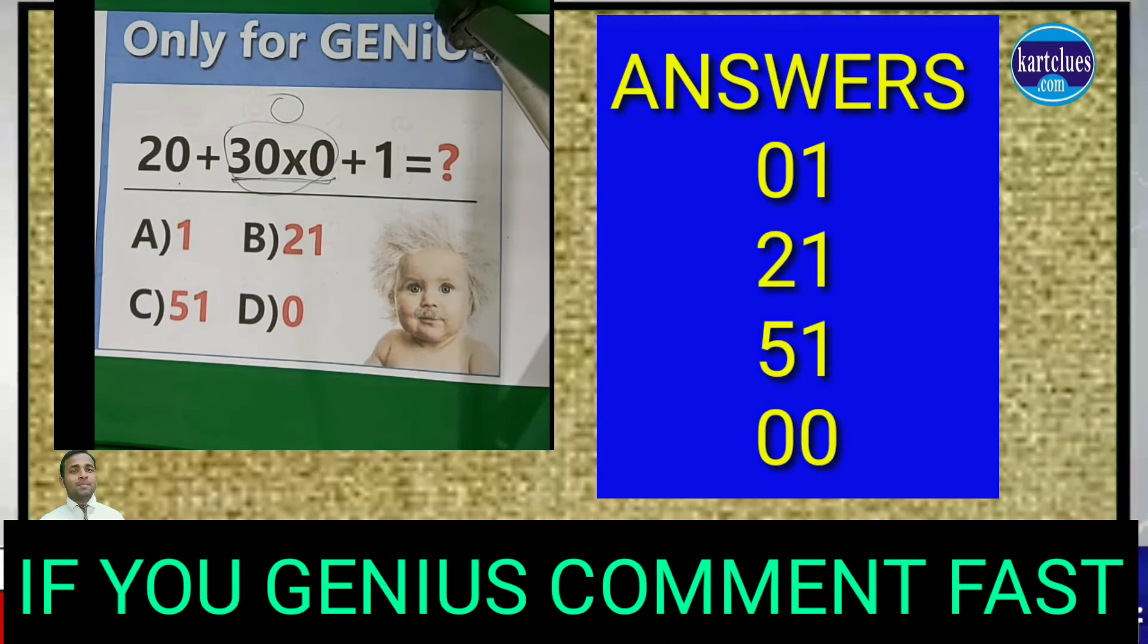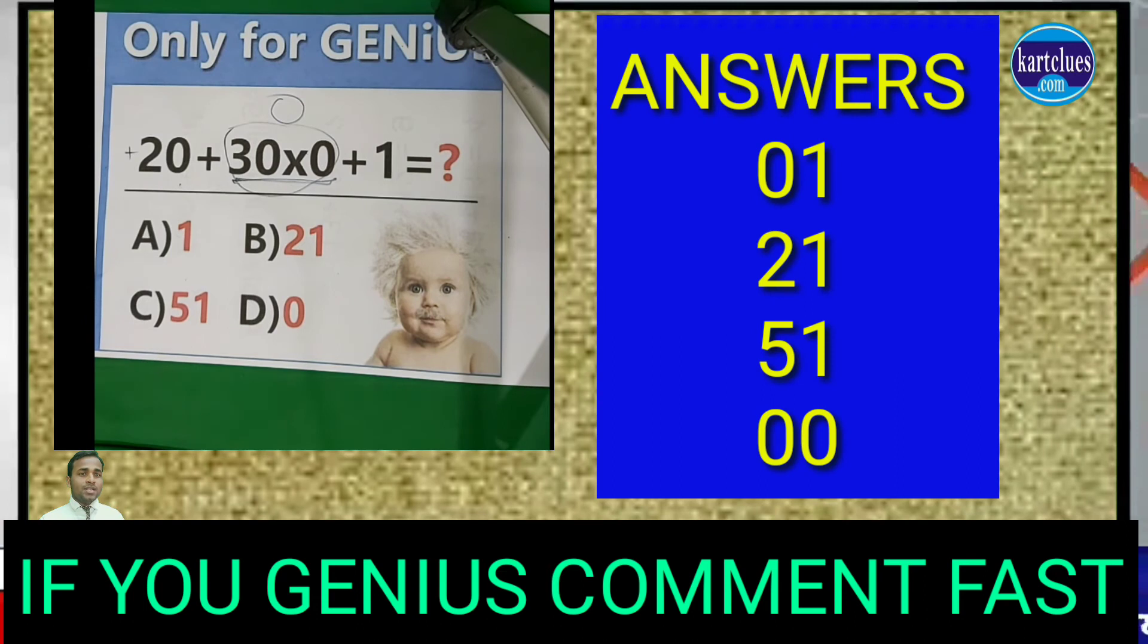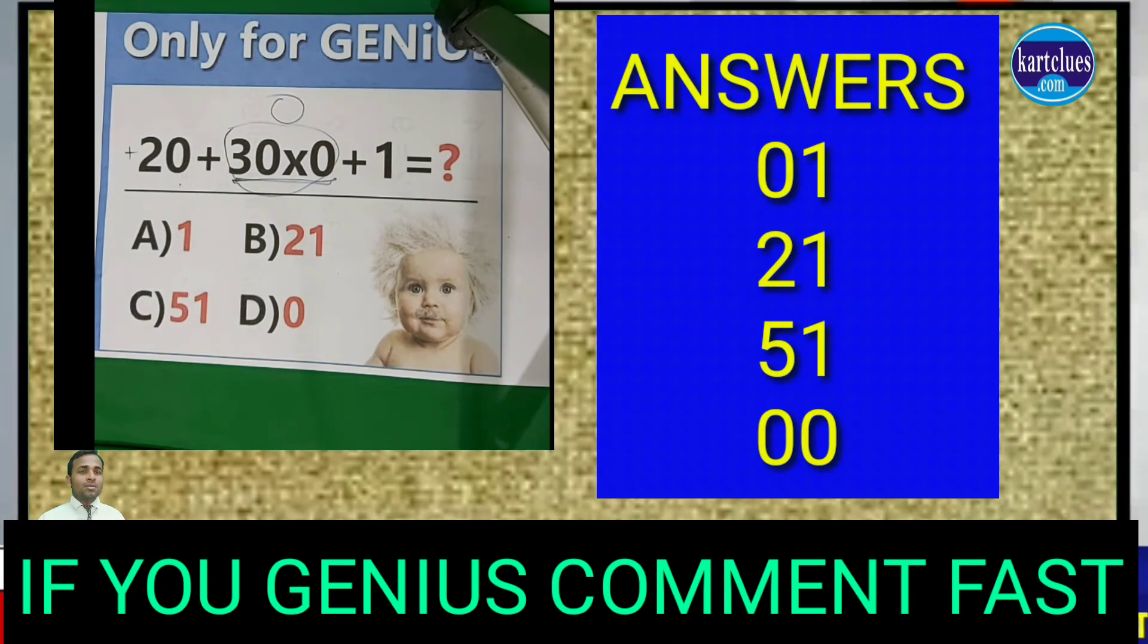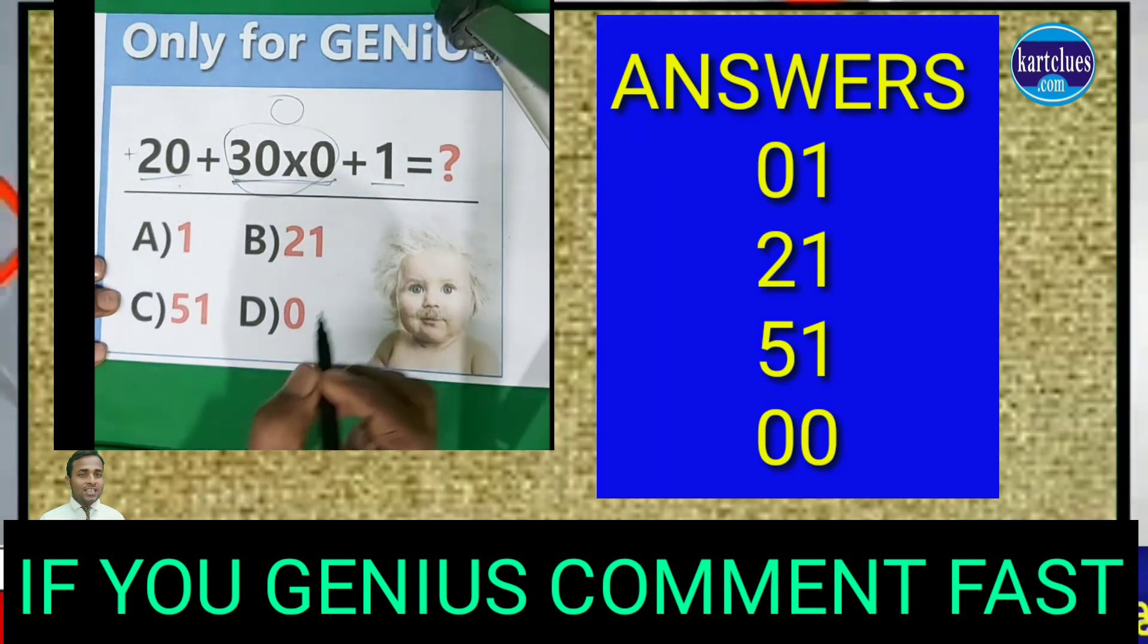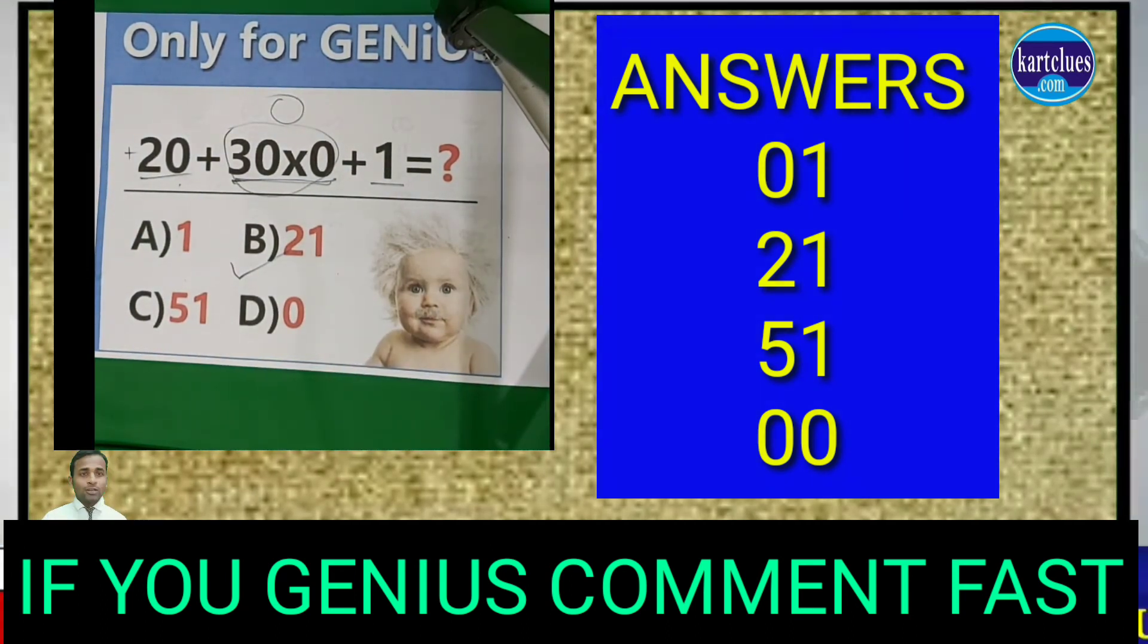After that, you have to do addition. If there's no operator before any number, that assumes it's plus. So 20 plus 0 plus 1 equals 21. I think you solved it.